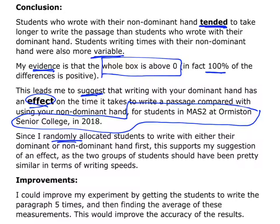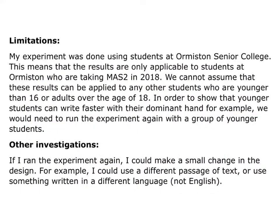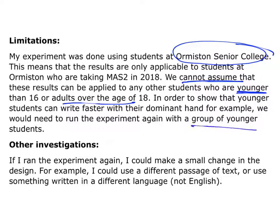Then I want to think about what I could do to improve it. One thing I could do is get students to write that paragraph five times, meaning I'm repeating the experiment multiple times, which will give me a more accurate estimate of how long it takes each student to write with their dominant or non-dominant hand. As a limitation, my experiment was done with students at OSC, so I can only apply my results to those students in that year — I can't assume the results apply to any other students, particularly ones younger or older. To show that younger students would have the same pattern, I would need to do an experiment with a group of younger people.